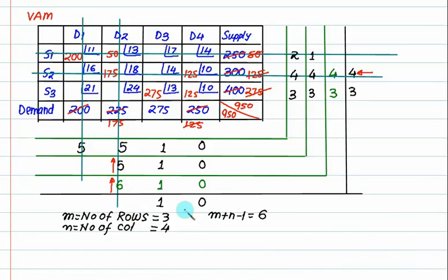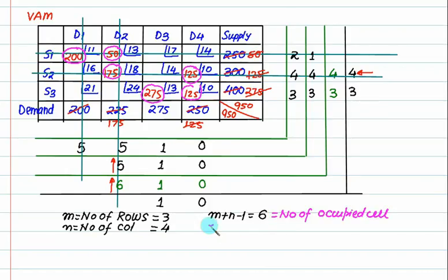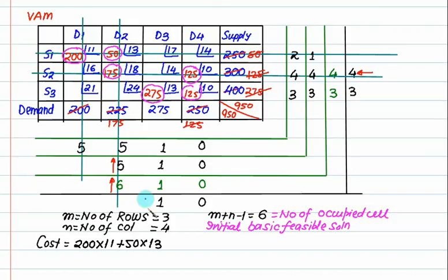Now check whether the solution is feasible. We need number of rows plus columns minus 1 to equal 6. Count allocations: 1, 2, 3, 4, 5 and 6. Number of occupied cells equals 6 — the solution is feasible. Cost: 200 multiplied by 11, plus 15 multiplied by 13, plus 175 multiplied by 18, plus 25 multiplied by 13, plus 25 multiplied by 10, plus 145 multiplied by 10.